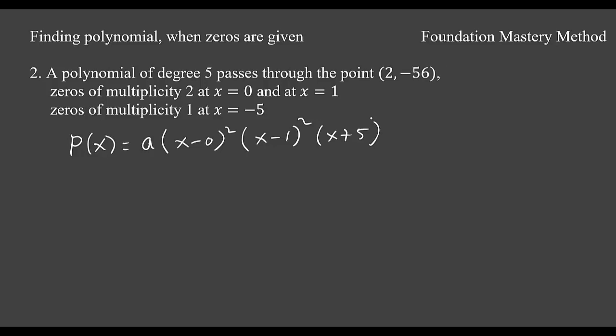So this is our polynomial, but we need to determine what is a. Now use this point. When my x is 2, y is negative 56. So we put here negative 56 equals a times we replace x by 2 squared,